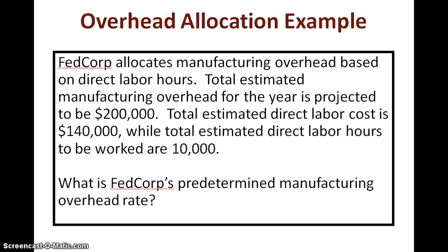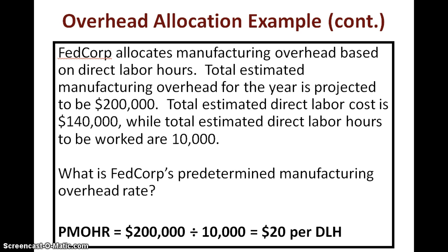The next thing is to apply your predetermined manufacturing overhead rate formula. The formula says: predetermined manufacturing overhead rate equals total estimated manufacturing overhead cost divided by total estimated allocation base. Estimated manufacturing overhead is $200,000 and estimated direct labor hours for the year is 10,000, so the predetermined manufacturing overhead rate is $20 per direct labor hour.